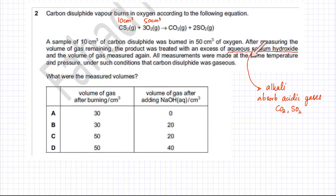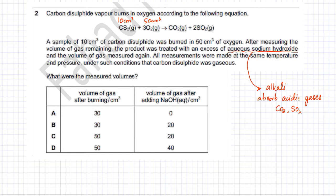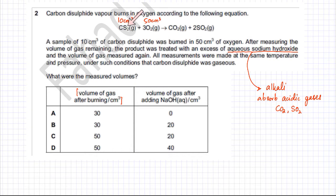All measurements were made at the same temperature and pressure, under conditions where carbon disulfide is gaseous. One key principle: for gases, the volume ratio and the mole ratio are exactly the same. So according to the reaction, 1 CS₂ reacts with 3 O₂.